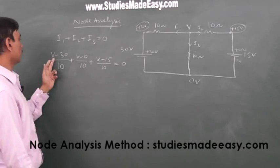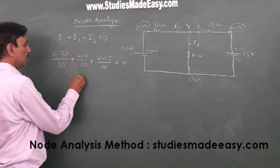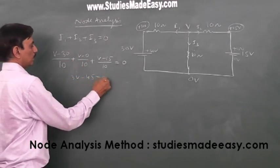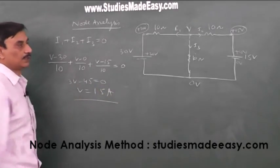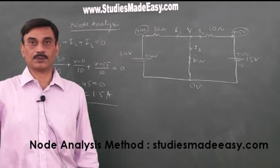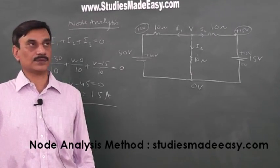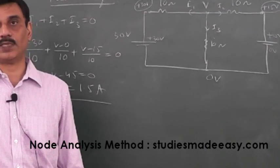So 10, 10, 10 cancel. V, V, V, I can say 3V minus 45 is equal to 0. V is equal to 15 volt. Directly you can get the answer. So simple, this is your node analysis method.